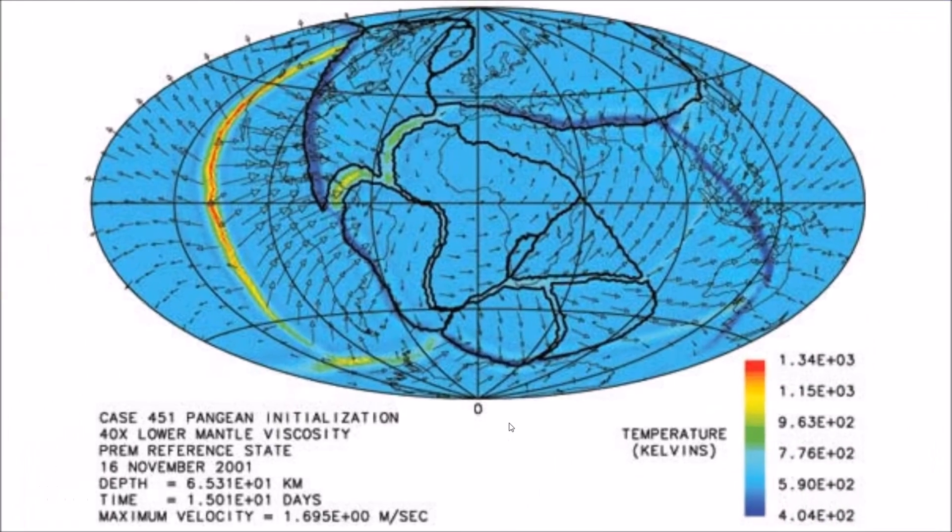And basically, it rips open that continent. And we have what's called the Mid-Atlantic Rift. And the old Pacific plate drops down towards the core of the planet.